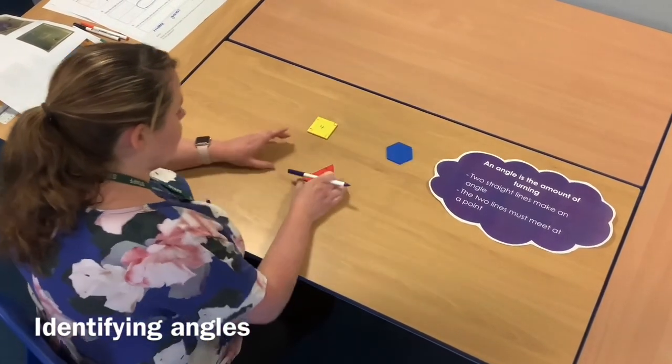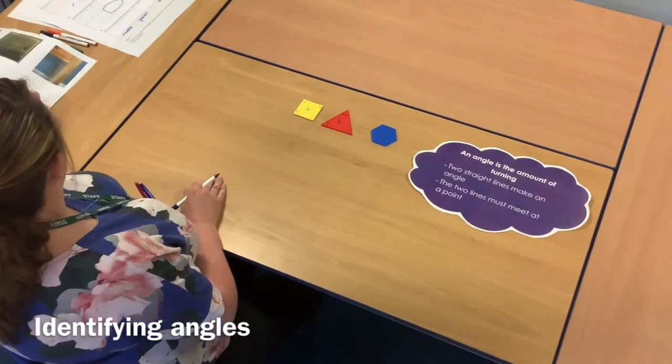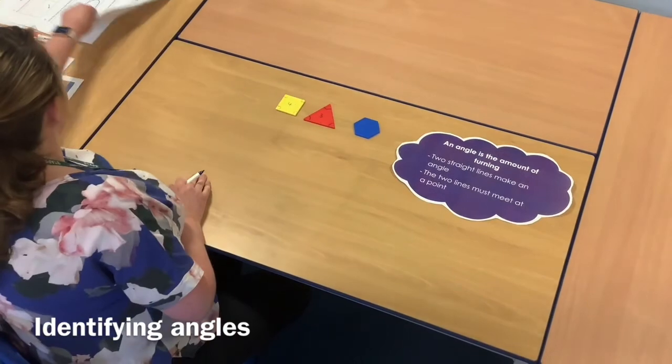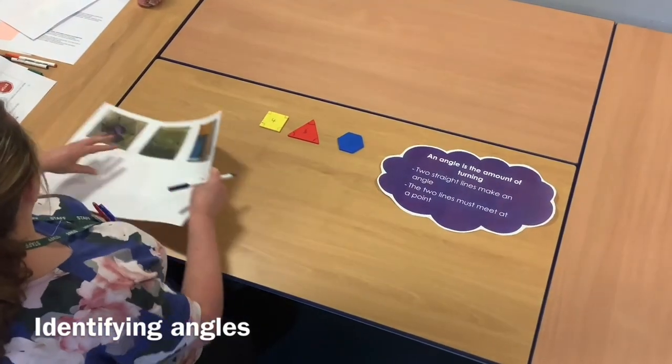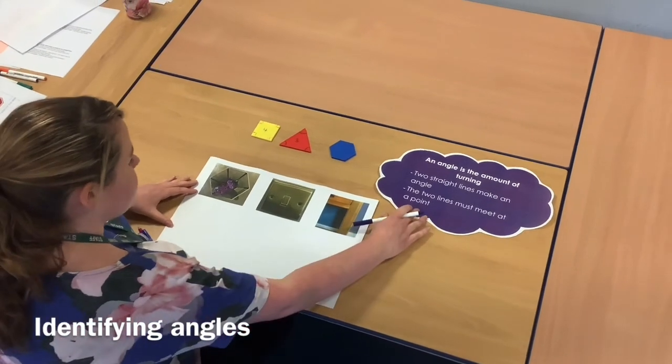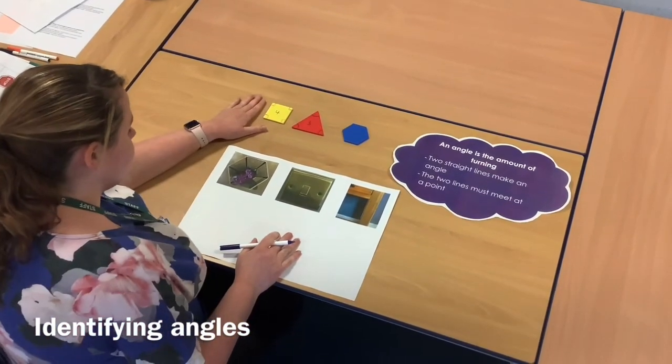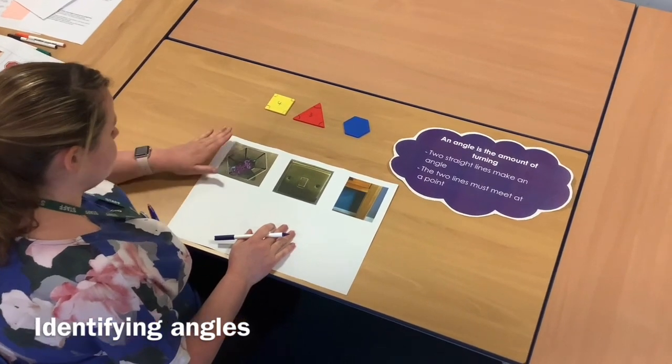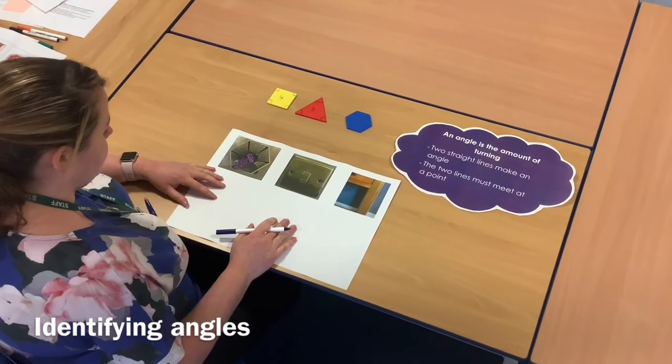So I'm just going to leave those up there for us. What I have then done is taken some pictures of some different objects. And just like we did with the 2D shapes, I can identify the angles on daily objects that you see around.